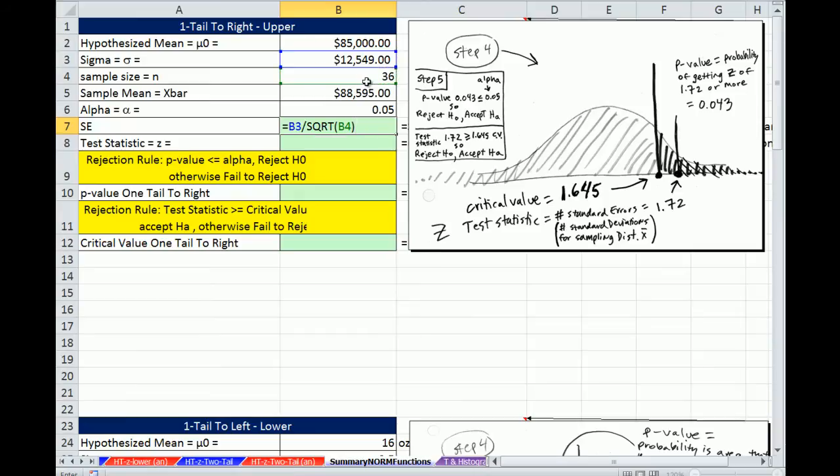That gives us the standard deviation for the sampling distribution of x bar, which is going to have less variation than the population distribution. So we have that.